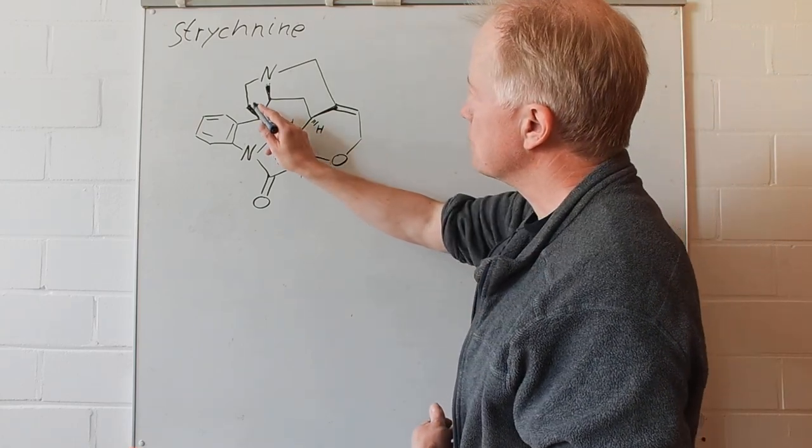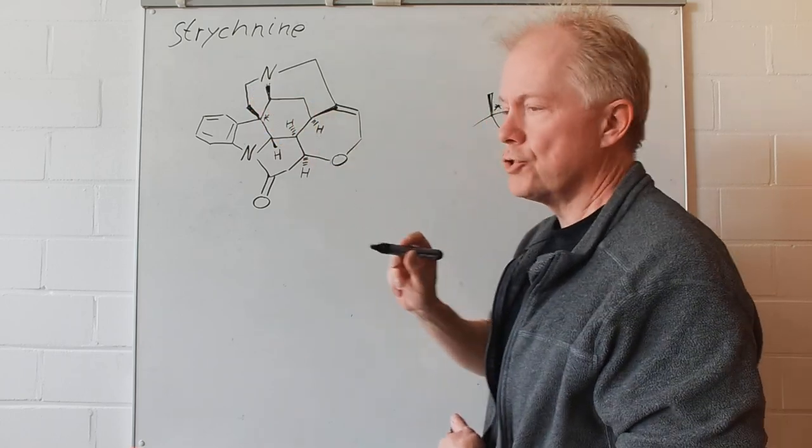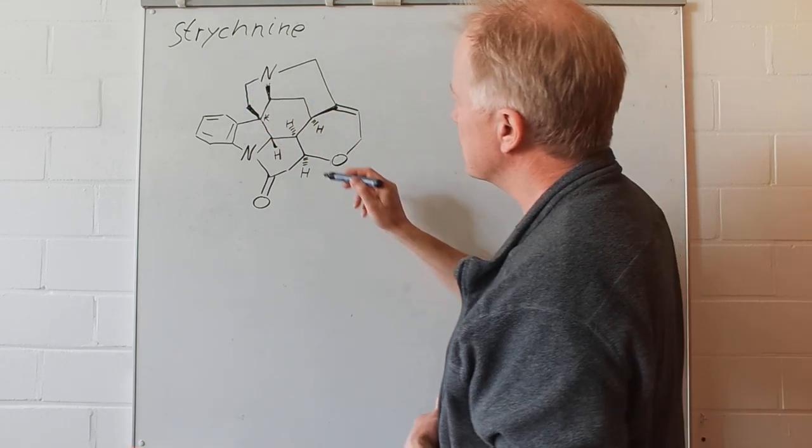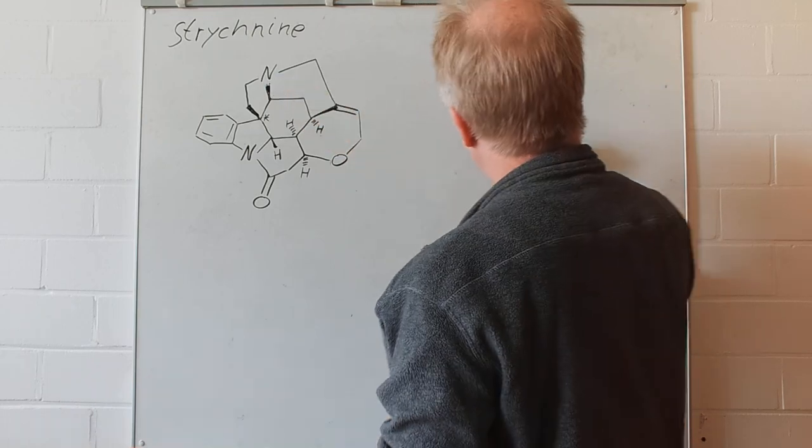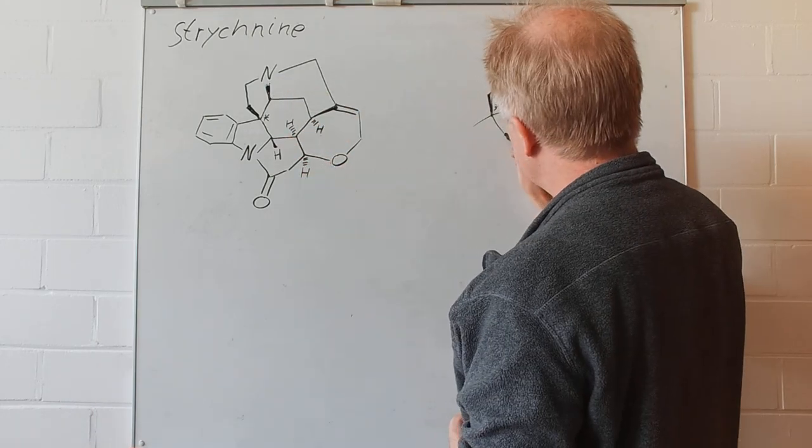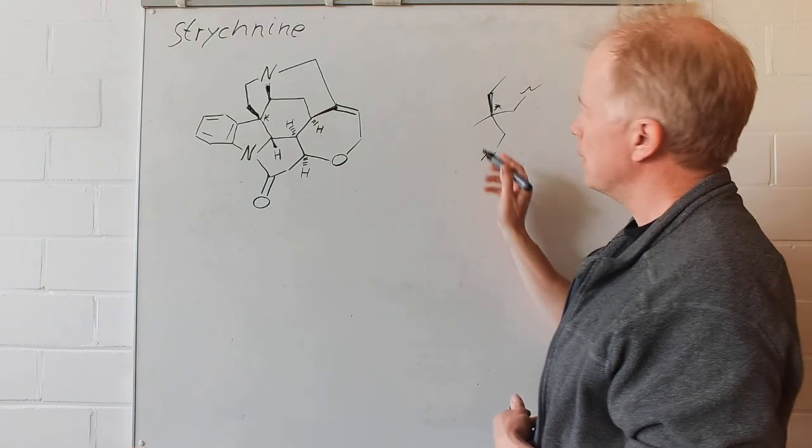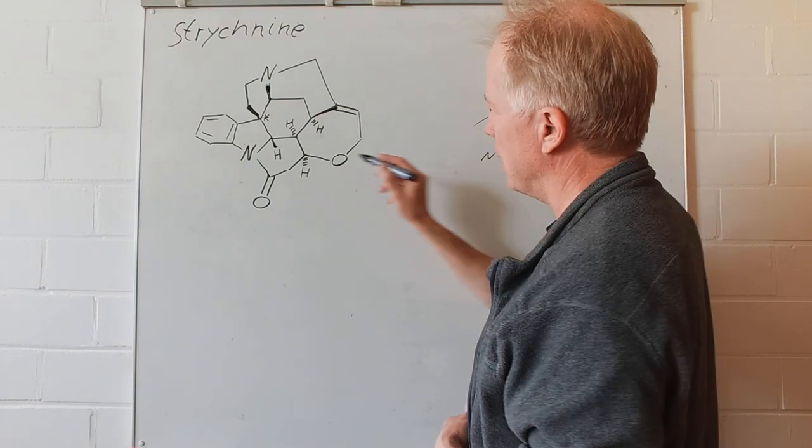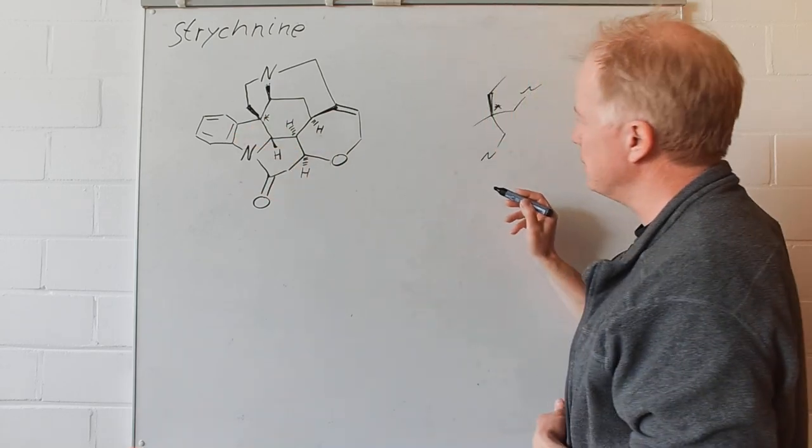At this carbon, one additional carbon is attached. Here we have the nitrogen. Here we also have a nitrogen and then here we have that benzene ring.